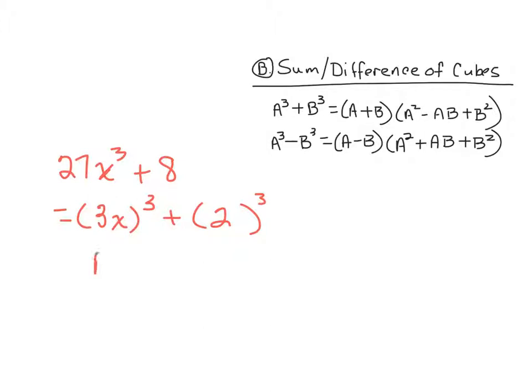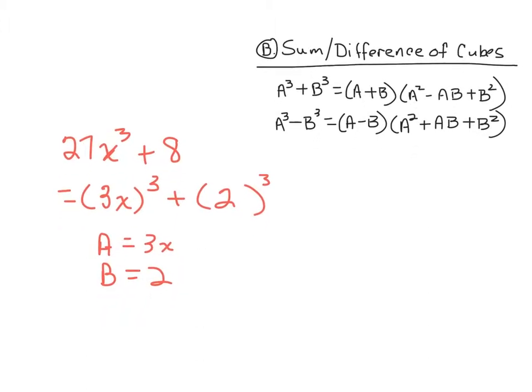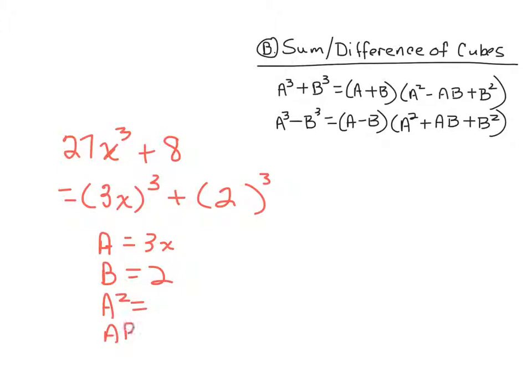Now, the reason that that's a good thing to do is we just identified what the A and the B are. Okay? My A is 3x and my B is 2. Now, I really only need three more things. If you look at both of these formulas over here, the A and the B both go in the first parenthesis. So our first parenthesis is already taken care of. The three other things that I need are always A squared, AB, and B squared. So let's list those out. A squared, AB, and B squared.